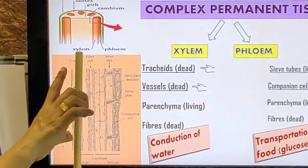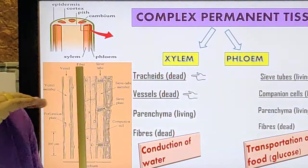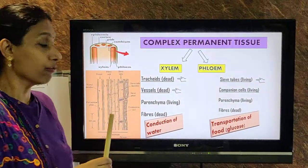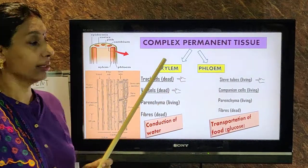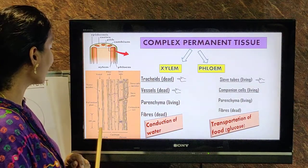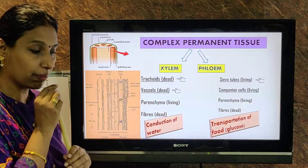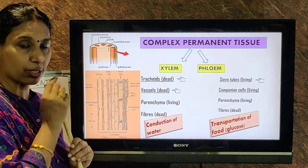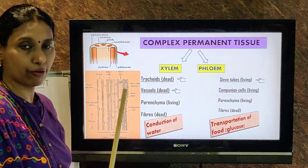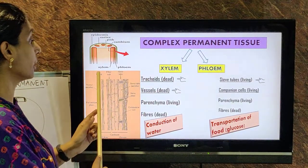Tracheids and vessels are long cells placed one above the other, with adjacent walls dissolved, forming a continuous tube from the roots to the top of the plant. That is why tracheids and vessels are made up of dead elements — dead cells. It is through these dead cells that water rises. It is like suction pressure — when you keep your straw in your mouth, suction pressure is created and water comes up. You will learn about that in detail in 10th standard. Remember: it is tracheids and vessels, the dead elements of xylem, that help in transportation of water upward.